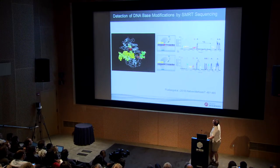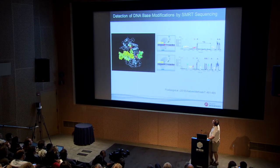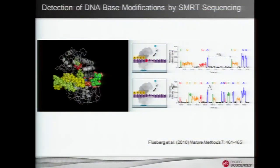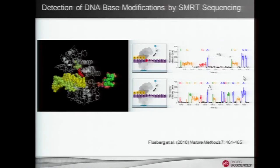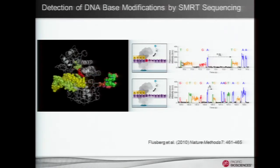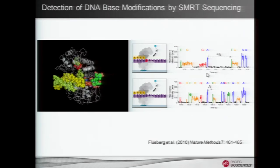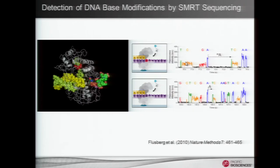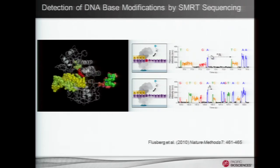As an example, here we have two different strands of DNA — identical, except this A residue is methylated in one case and unmethylated in the other. When we look at a trace from the sequencing reaction, we see these different color pulses of light representing different nucleotides being observed, with time along the x-axis and intensity along the y-axis. So we see these color bursts of light indicating which nucleotide is being incorporated during the reaction.